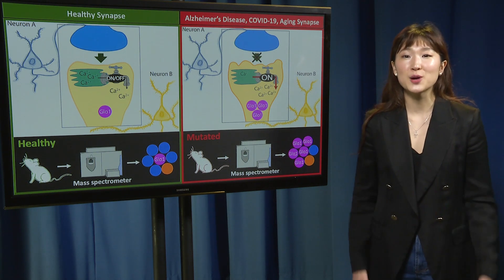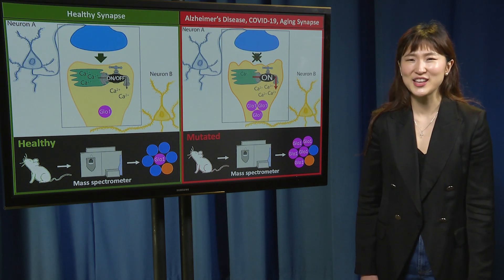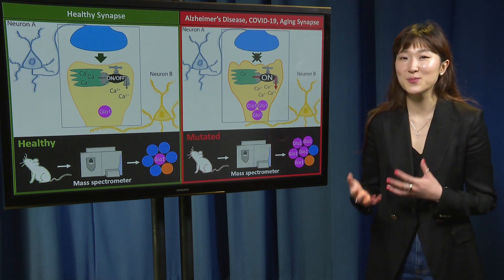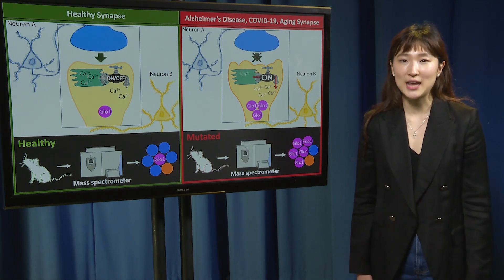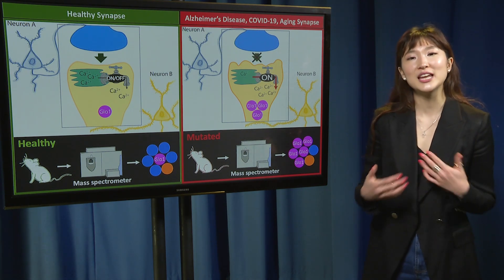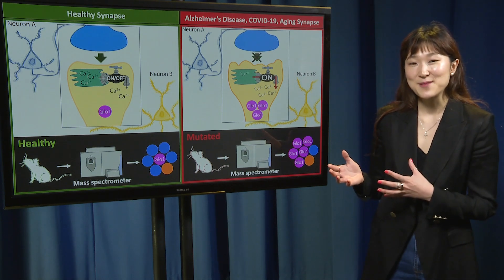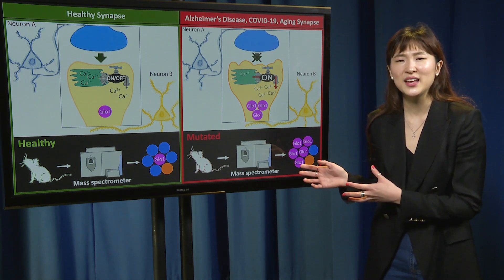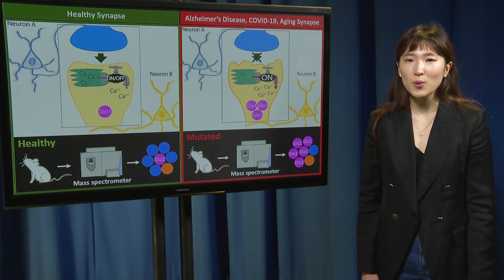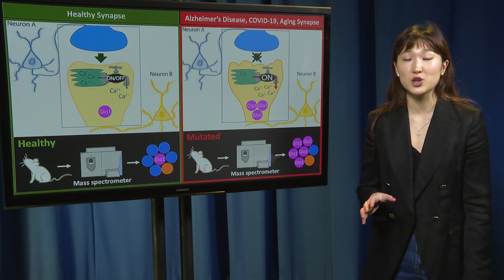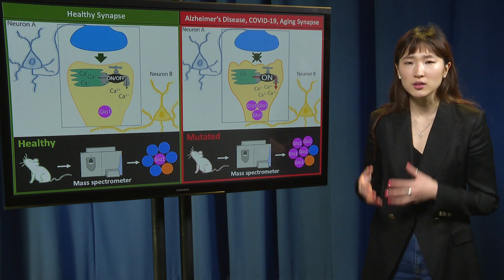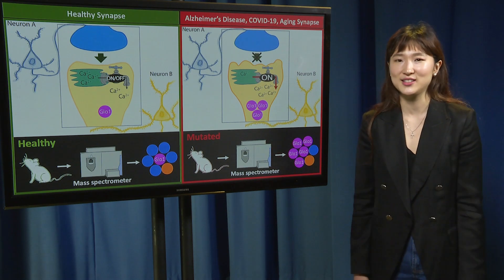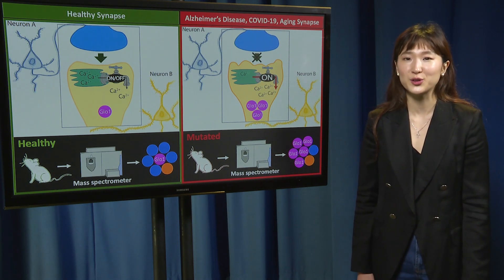Our brains are composed of vast networks of neurons, allowing complex functions like memory to emerge. Neurons form these networks by communicating with each other at the synapse, magnified here connecting neurons A and B. These connection sites are so important that many studies have shown that synapse loss best correlates to memory loss, behooving us to look to the synapse for clues.